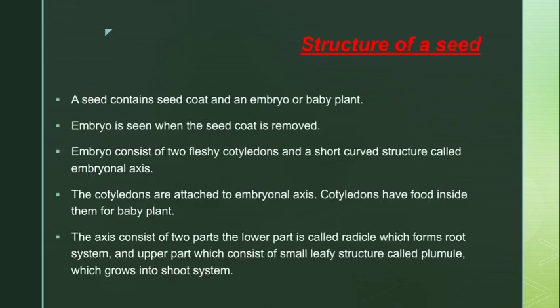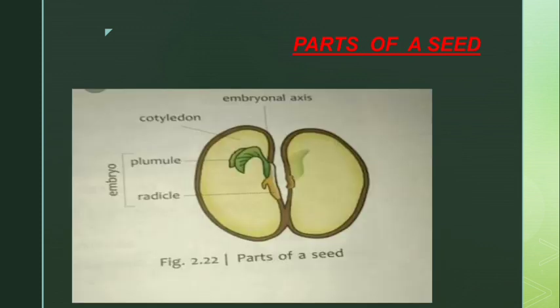Structure of a seed: a seed contains a seed coat and an embryo, or baby plant. The outer brown covering of the seed, which you can see in this diagram, is the seed coat — it is just like a covering of a seed. Inside the seed there is an embryo, which converts into a baby plant later when we sow the seed.